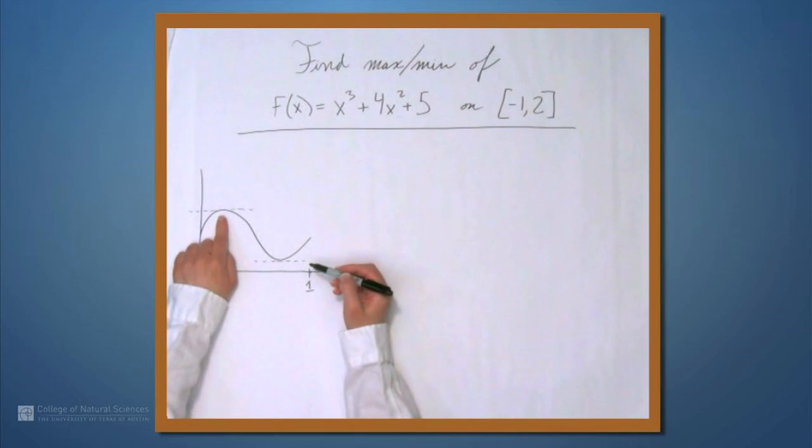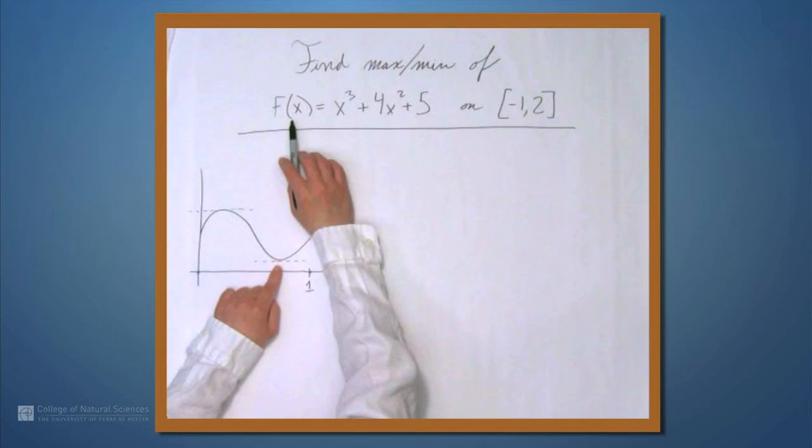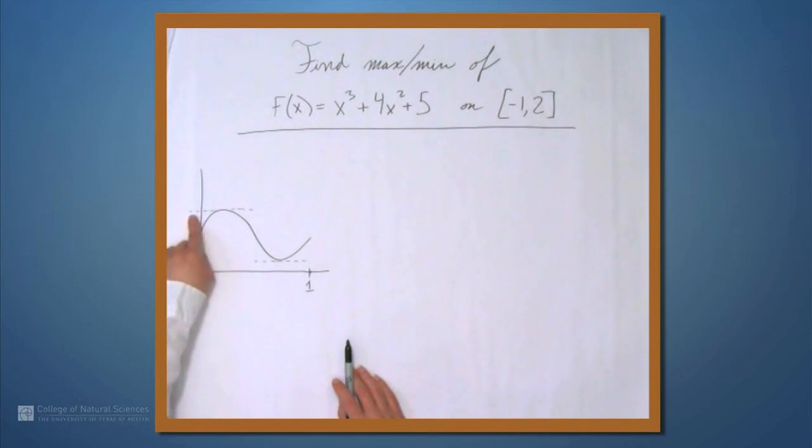So, in a case like this, we're going to find the max and minimum values by looking for places where the derivative of this function is 0, because the derivative of 0 will give us horizontal tangent lines.